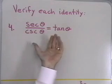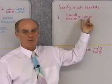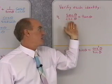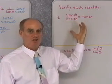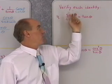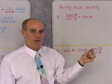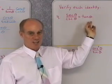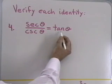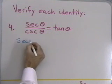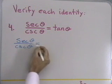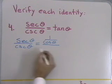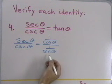When we say we want to verify an identity, we want to show that it is true for all replacements of the variable for which the expressions are defined. What I'll do is take the left side and turn it into the right side using algebra and my basic trigonometric identities. I'll start with secant θ over cosecant θ and change everything to sines and cosines. Secant θ is 1 over cosine θ, and cosecant θ is 1 over sine θ — those are reciprocal identities.